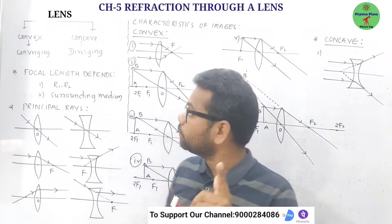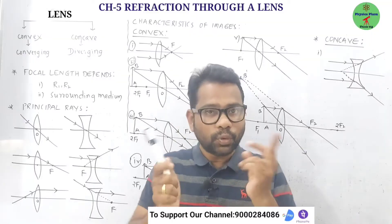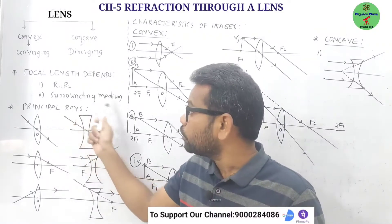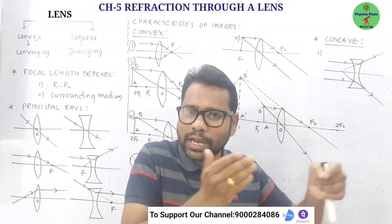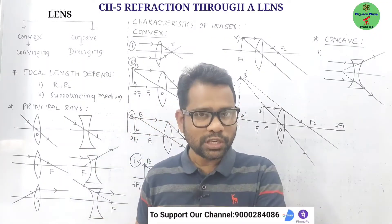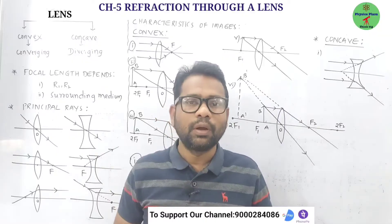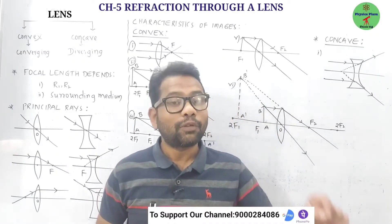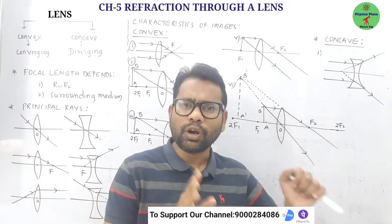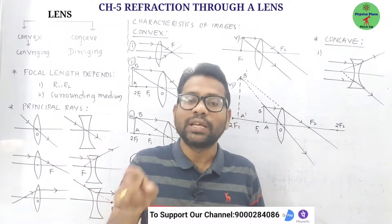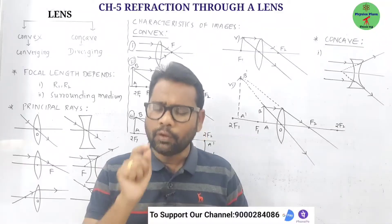Focal length depends on two factors: the radii of curvature of the lens, and the surrounding medium in which it is placed. If half the lens is covered with a non-transparent material, the focal length does not change — only the intensity of the image decreases. If a lens is placed in a medium other than air, such as water, its focal length increases.